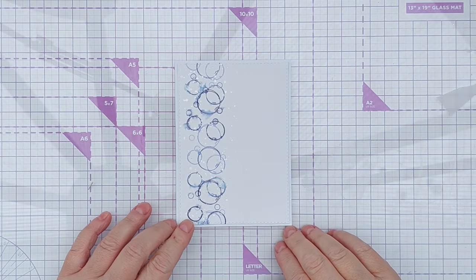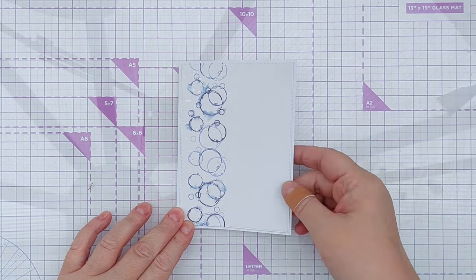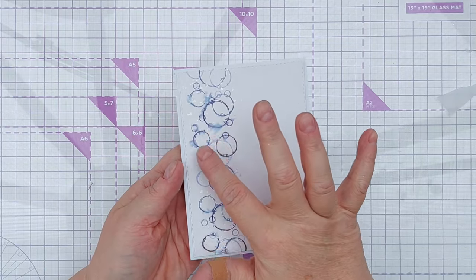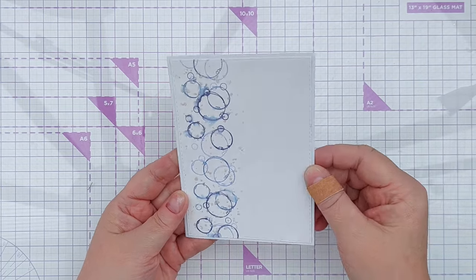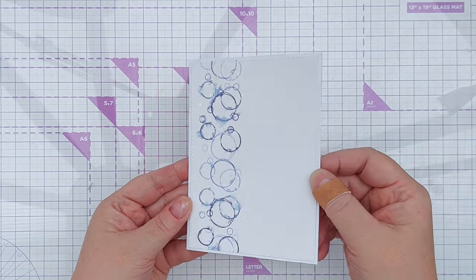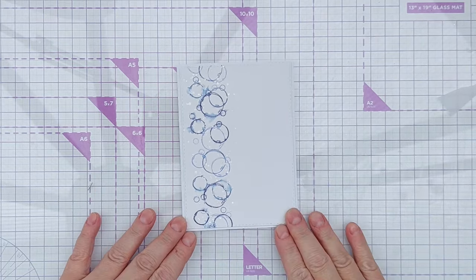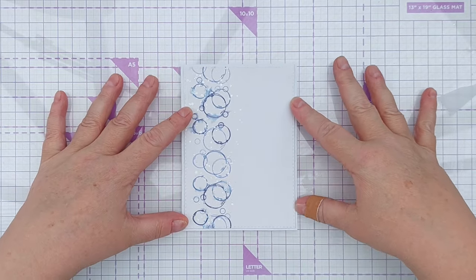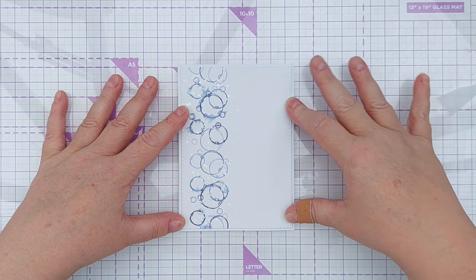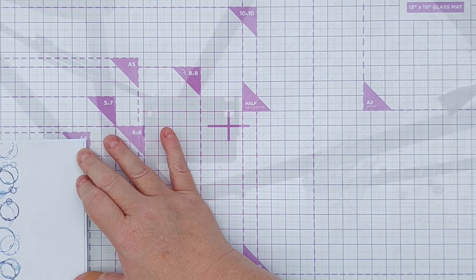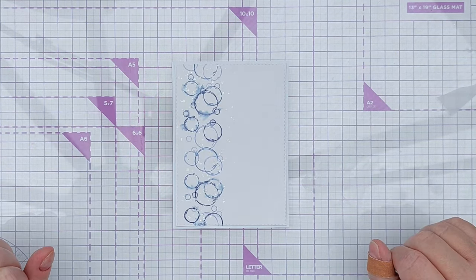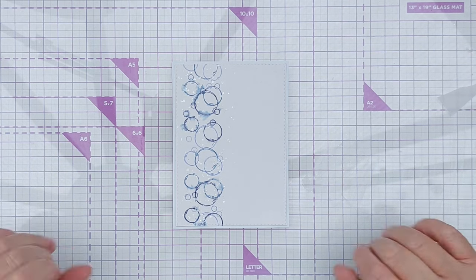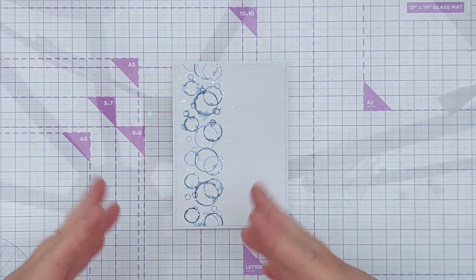Right, this has dried nicely now and I hope you can see all the kind of splotchy, blotchy areas that splattering on the shimmer powder and the water created. I really like that. So I've stuck this on a card blank. I think it is now 4 by 5 and a half-ish inches and I think it's time to add a die cut and a sentiment to finish it off.